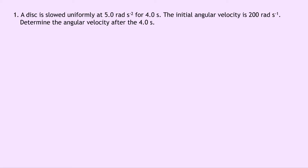We're going to start by writing down what we know from the question. We're trying to find the angular displacement theta. The initial angular velocity ω₀ is 200 radians per second. We don't know what the final angular velocity is. The angular acceleration is minus 5 radians per second squared — we've used the negative here because the disk is slowing down, so it must be a negative acceleration, which is a deceleration. And lastly, the time is 4.0 seconds. So remember we're trying to find the final angular velocity — I'll put a star next to that one. Notice we don't know the angular displacement theta.